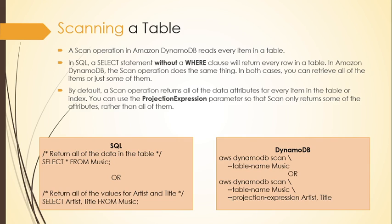You can use the projection expression parameter so that scan only returns some of the attributes rather than all of them. If you want to retrieve all items, you can use scan; if you don't want to retrieve data for all attributes, you can use projection expression. For SQL, the statement is: SELECT * FROM Music — this returns all data from the Music table, and it is similar to the DynamoDB scan statement: aws dynamodb scan --table-name Music.